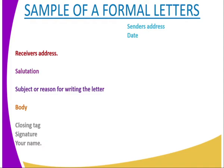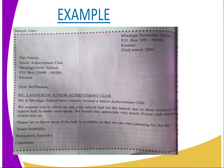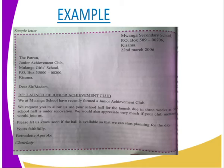You can have your closing tag, signature, and name. For instance, in the example shown, we have a secondary school with a P.O. Box and date on the right, and the addressee on the left. We also have the box number, salutation, and the heading stating the reason for writing — 'Launch of Junior Achievement Club.' We can see the body and lastly the signing off: 'Yours faithfully, Bernadette Aporoco, Chair Lady.'